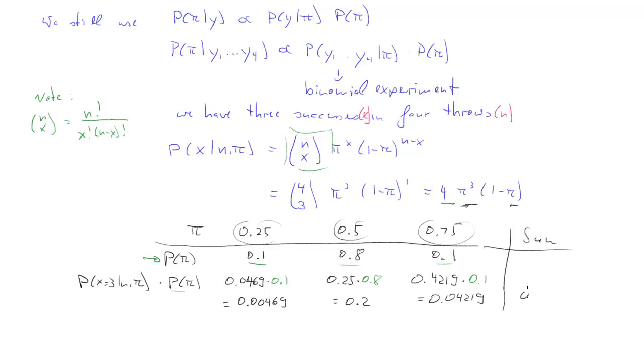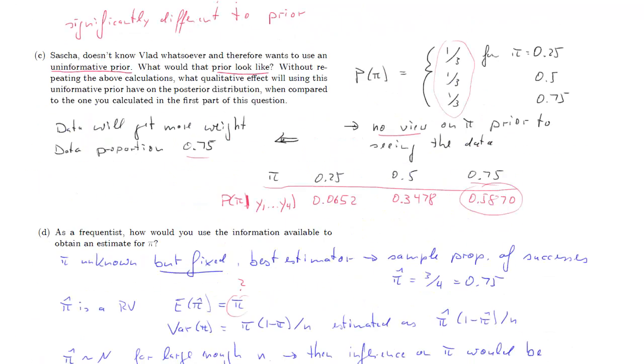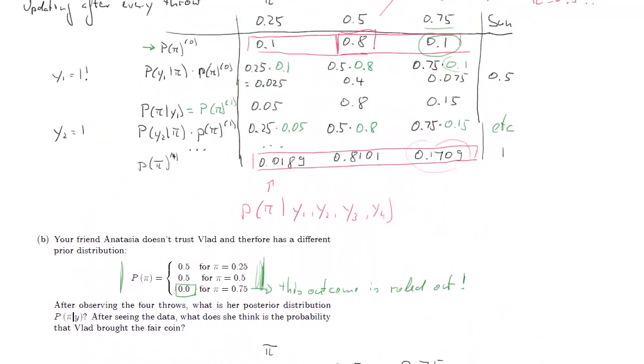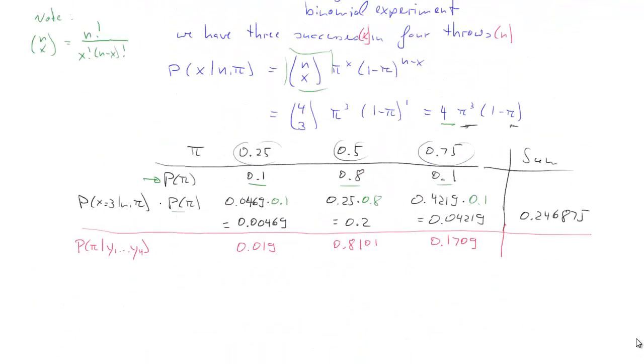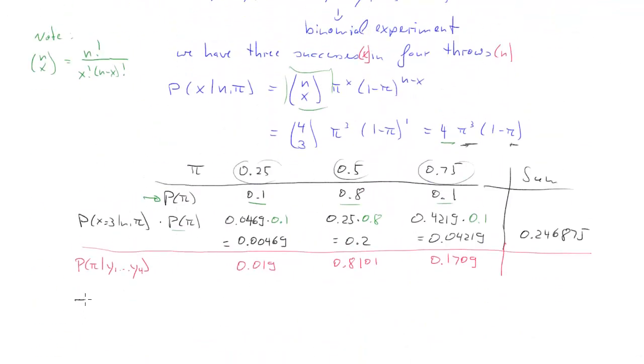Now if we sum all these guys up, that will be less than one. In fact, that will be 0.246875. And to get our posterior, all we're going to do is we're going to rescale these last three probabilities to sum up to one. And that will then be the posterior probability of pi, given our four data points. So once you do that, we get the following probabilities, 0.019, 0.8101, and 0.1709. And it turns out these are exactly the same probabilities, posterior probabilities, as the ones we got in part A. So where we do the stepwise updating as in part A, or the updating in one go, considering all data points as in part E, doesn't really matter.